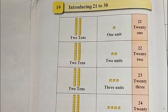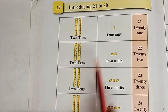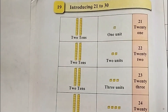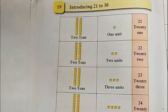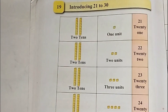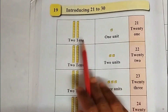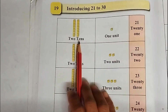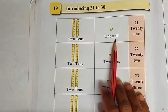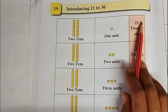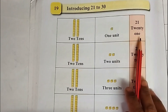Hello everyone. Today we are going to learn subject Maths. In that we are going to learn lesson number 19, introducing 21 to 30, given on page number 50 to 52. Here you all can see there are 3 columns: the first column shows tens, the second shows units, and the third has numbers written in figures and in words.